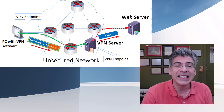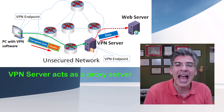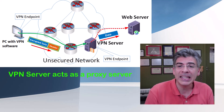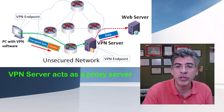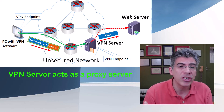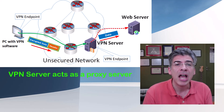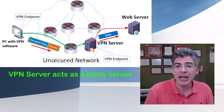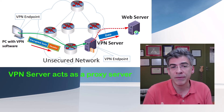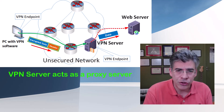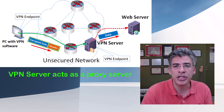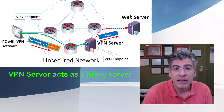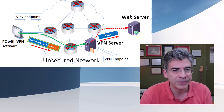Secondly, the VPN server actually acts as a proxy server. So the packet that reaches the web server actually has the source IP address of the VPN server. Your original IP address, and thus your physical location, and other attributes that you can determine from an IP address are hidden from the web server itself.